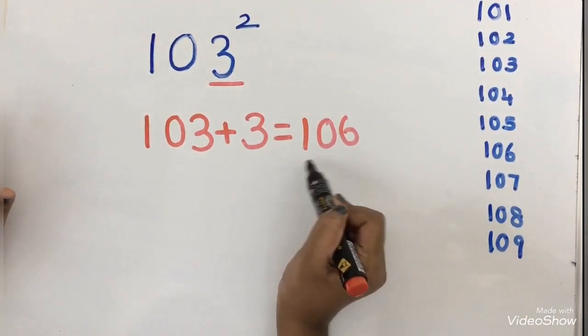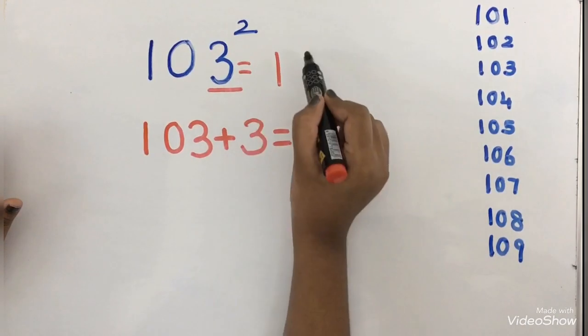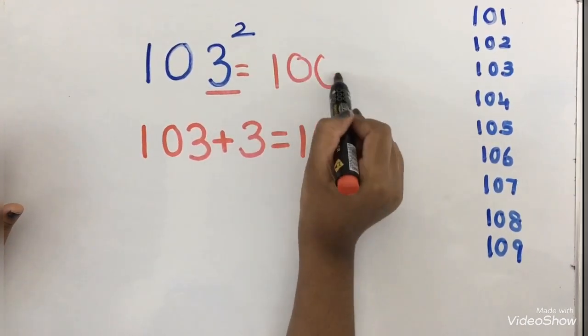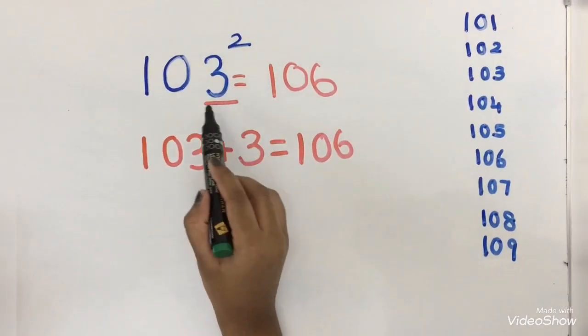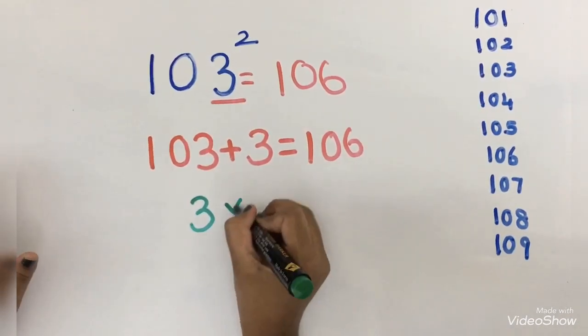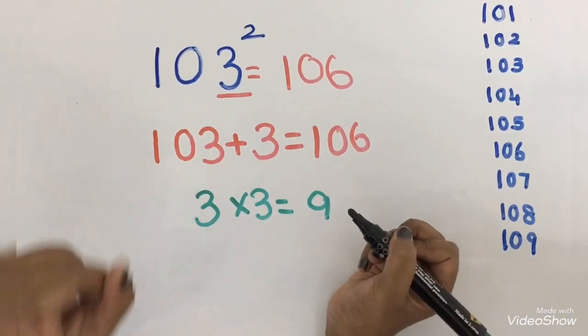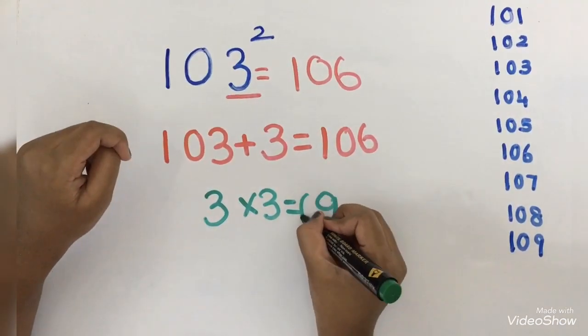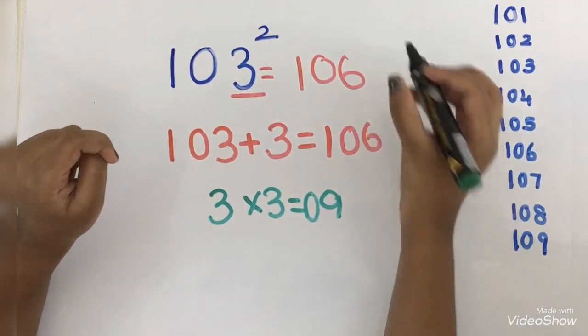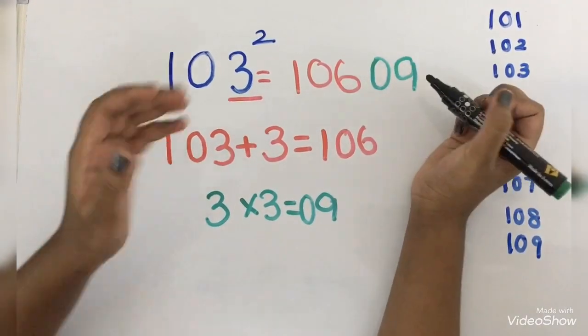Now I am going to write 106 over here. Now we are going to multiply this 3 two times. So 3 into 3 equals 9. But there is only one digit, so I am going to add 0 in front. Now I am going to write 09 over here. This is the answer. If you want, you can also check it in the calculator.